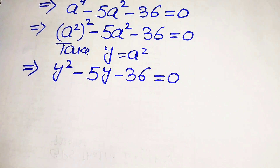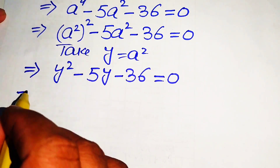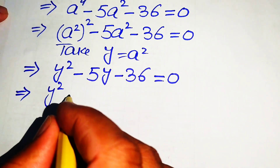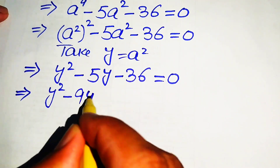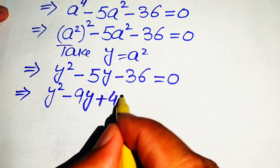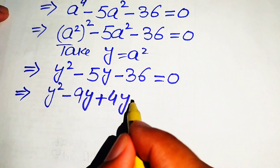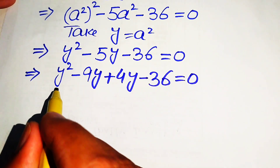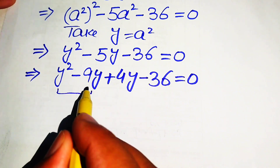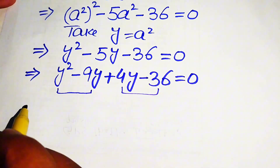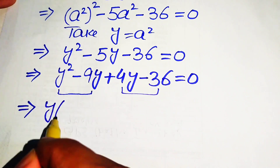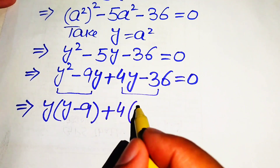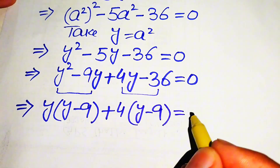We factor by breaking the middle term -5y as -9y + 4y, since -9 + 4 = -5 and -9 × 4 = -36. The equation becomes y(y - 9) + 4(y - 9) = 0, so we factor out (y - 9) to get (y - 9)(y + 4) = 0.